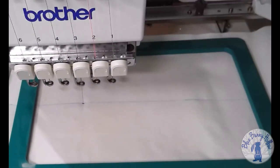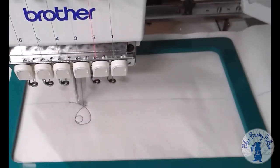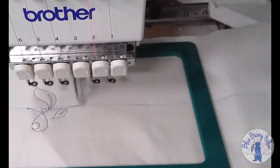When you start, if you have the domestic machine, pull the bobbin thread to the top of the quilt before starting. This keeps the back tidy.